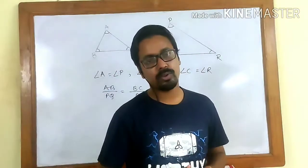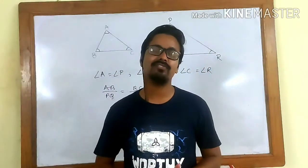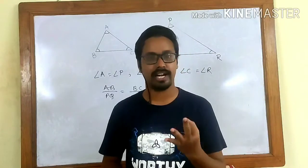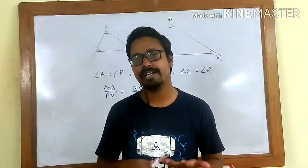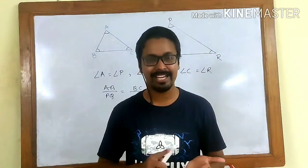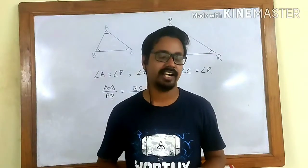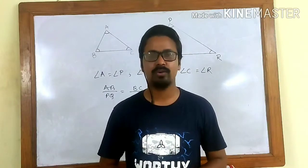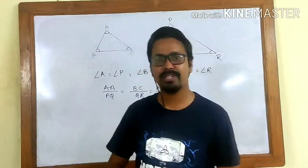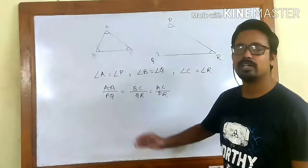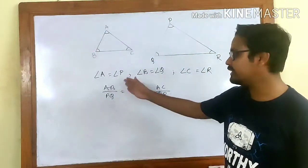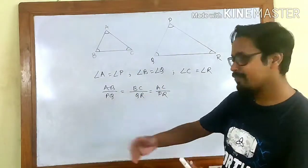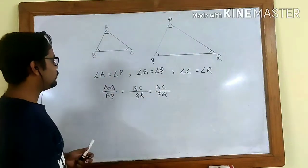Now, if you want to move on to the criteria for similarity of triangles, we have three criteria named as Angle-Angle-Angle, Side-Side-Side, and Side-Angle-Side — which are very simple, and we will use these three criteria in solving problems.